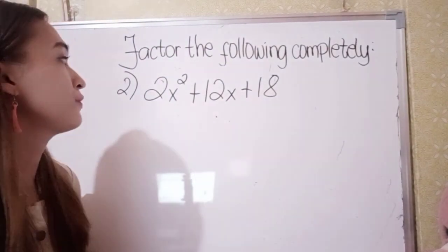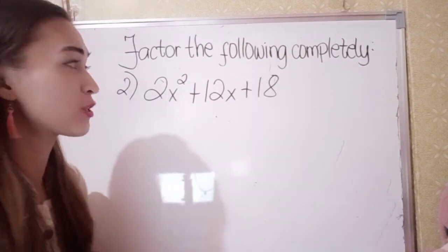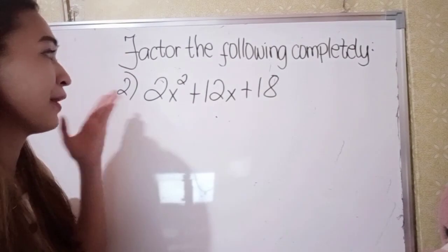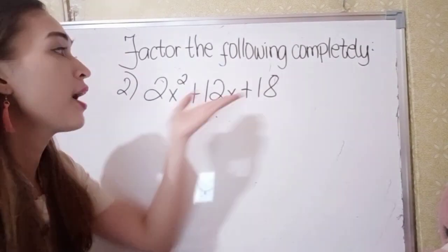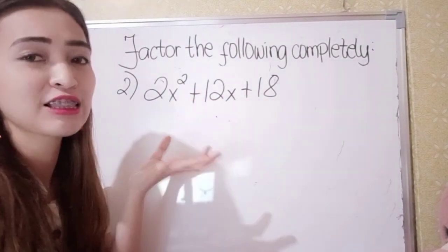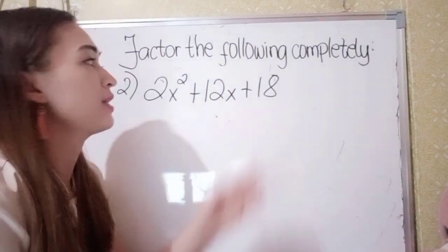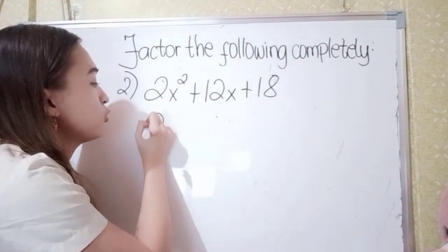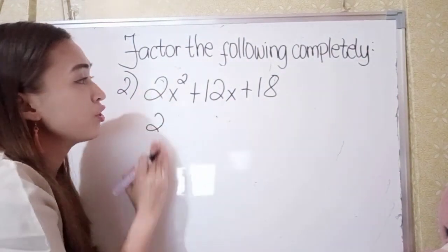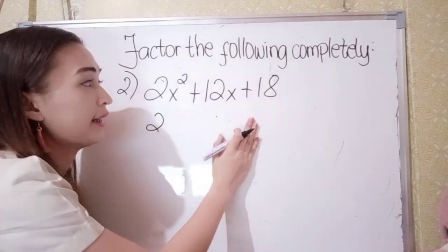In number 2, we have 2x squared plus 12x plus 18. Again, think of a number that can divide 2, 12, and 18. The least number is 2, because 2 can divide 2, 2 can divide 12, and 2 can divide 18.